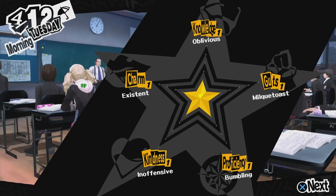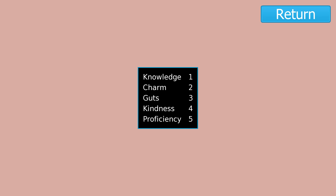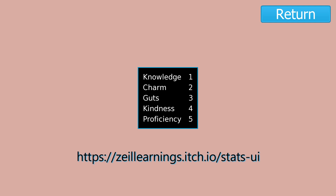In the Persona series, the main character has 5 social stats. In this tutorial, we'll create the 5 stats and show them on the screen. I uploaded the assets and the code on itch.io. You can check out the link in the description.